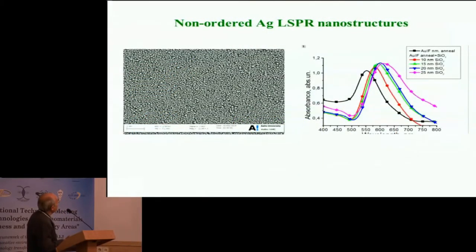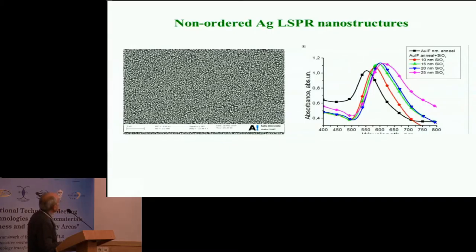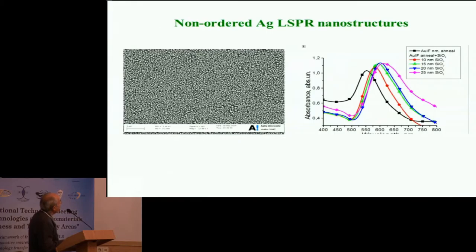In the conditions of Ukraine, it is more preferable to use simpler techniques. We mostly use techniques that allow us to obtain nanochips through the deposition of island films of gold or silver with subsequent annealing. You can see the surface and the spectra of these nanostructures.